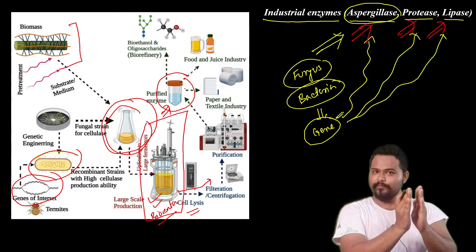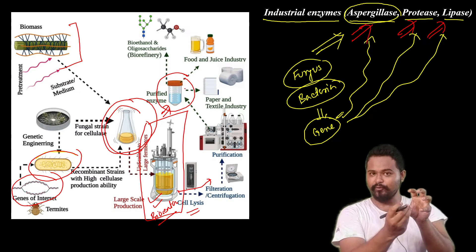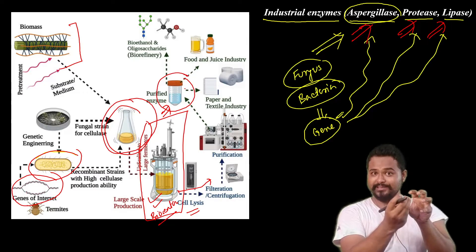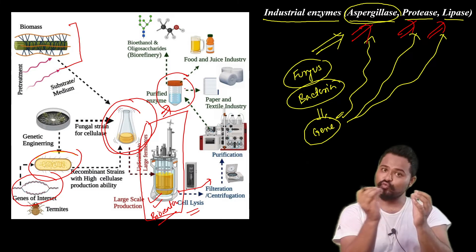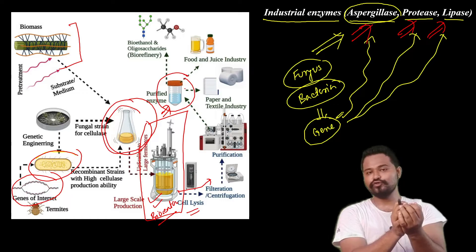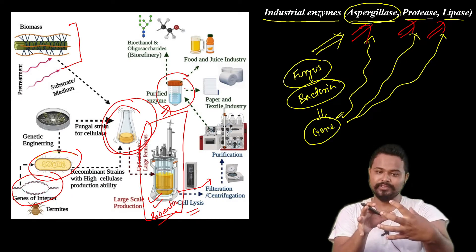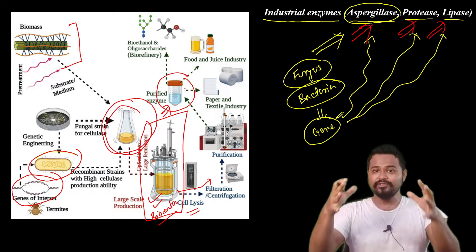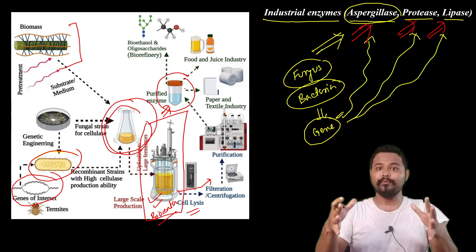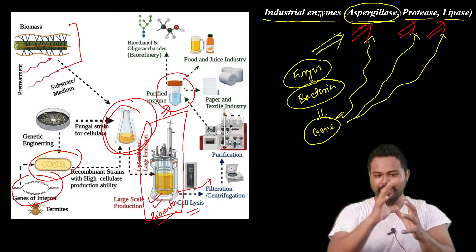First you have a bacterial strain. The gene of interest is inserted into the bacterial strain using recombinant technology. You culture the cells at the industrial level using a bioreactor, batch by batch.